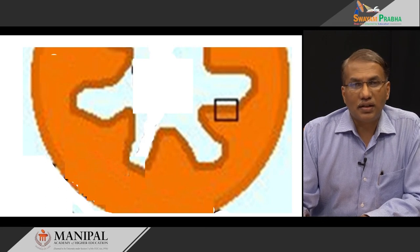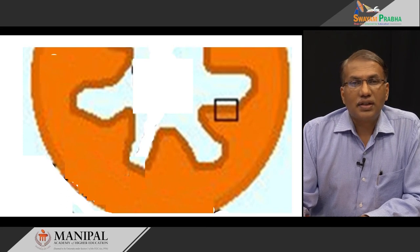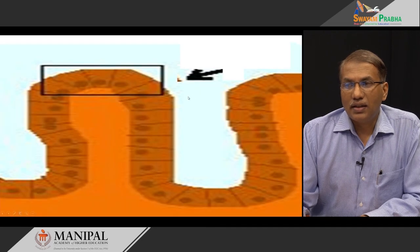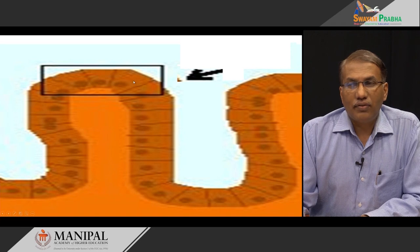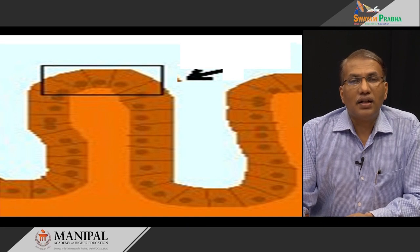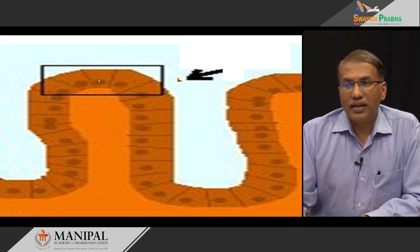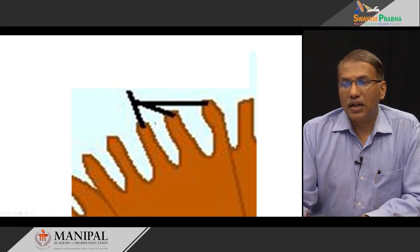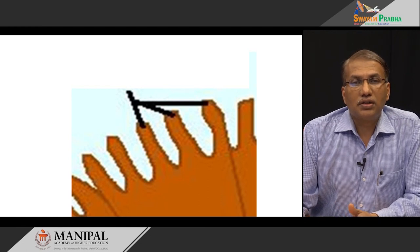This tremendously increases the surface area available for absorption and is one of the important factors affecting the rate of absorption. Each such fold is called a villus. Each villus has multiple smaller folds also called villi, further increasing the surface area. Magnifying further, you see microvilli — by virtue of these multiple levels of folds, there is maybe a 1000-times increase in surface area, so that nutrients in our diet are optimally absorbed in the shortest possible time.